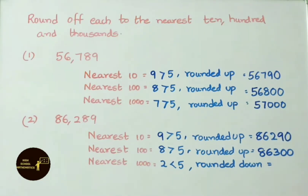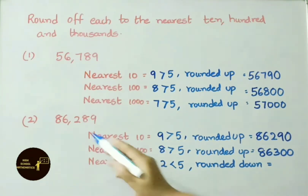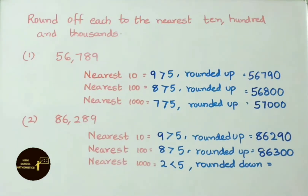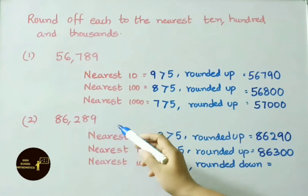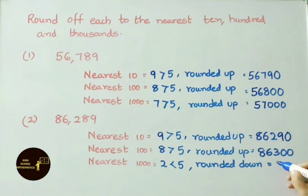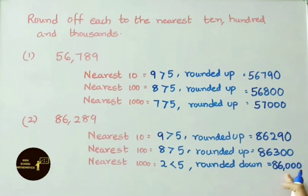86,300 is the nearest 100 value for 86,289. Nearest 1000: the digit to the right of the 1000s place is 2. Since 2 is less than 5, we round down — the last three digits become 0s and 86,000 remains the same. Therefore 86,000 is the nearest 1000 value for 86,289.